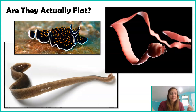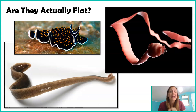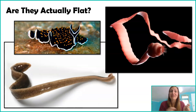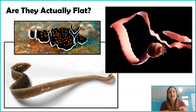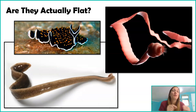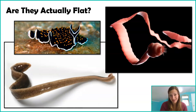Now obviously these aren't to scale, but to give you an idea of how thick a flat worm is, most flat worms are between 0.5 and 1 millimeter thick.